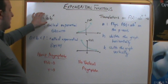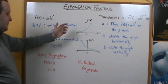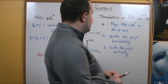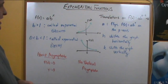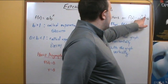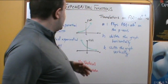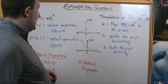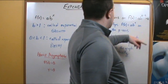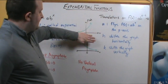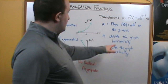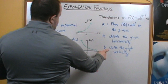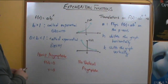Now let's talk about how we can move this graph right, left, up, down, flip it, and so forth. If we have the function f of x equals a times b to the x minus h plus k, the value of a tells you if the graph stays on top of the x-axis or flips across it. If b is positive and a is negative, the graph flips on the x-axis. The value of h shifts the graph horizontally, and k shifts the graph vertically.